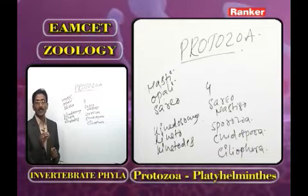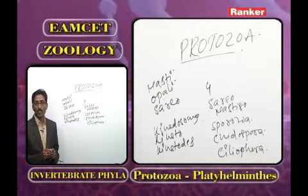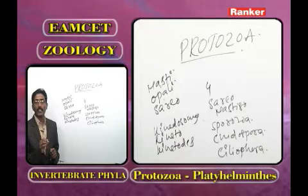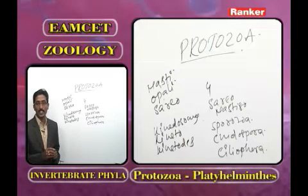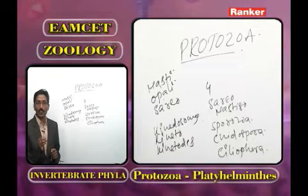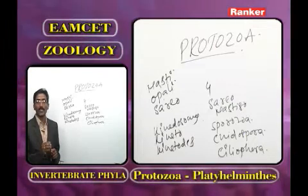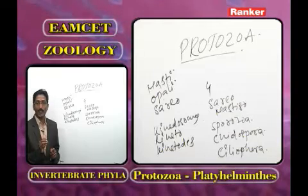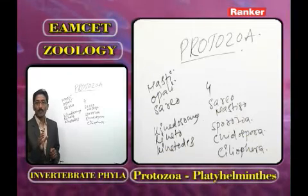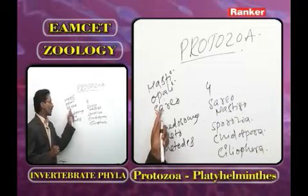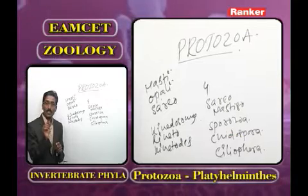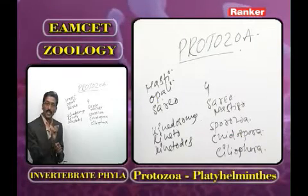Examples for mycetozoa are Physarum and Dictyostelium. The example for foraminiferans is Elphidium, also known as Polystomella. In Sarcodina, class Rhizopodea mainly has lobopodia as pseudopodia.